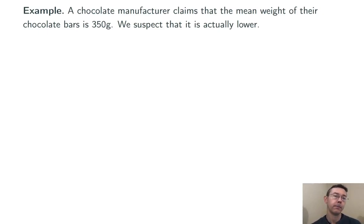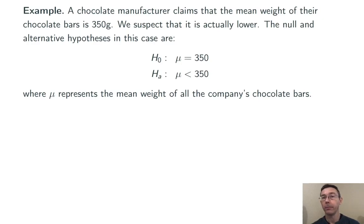Let's see a couple of examples. A chocolate manufacturer claims that the mean weight of their chocolate bars is 350 grams. We suspect that it is actually lower. So we set up a significance test. We set a null hypothesis that the company's claim is true, and an alternative hypothesis that the mean weight of their chocolate bars is actually less than 350 grams.